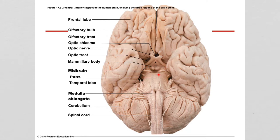This whole area forms what we call the midbrain, and that's the first part of the brain stem proper. The brain stem consists of three parts: the midbrain, the pons, and the medulla oblongata.